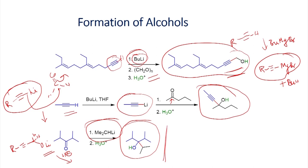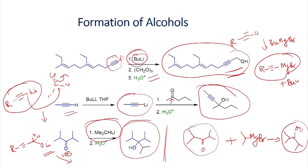This is a very important example. When you carry out the reaction using a Grignard reagent with this substrate, it does not give the addition product; instead it reduces the carbonyl group to give a secondary alcohol. This is because of the bulkiness of the isopropyl group. On the other hand, in the case of isopropyl lithium reagent, it can readily undergo addition reaction to generate the tertiary alcohol as the product.